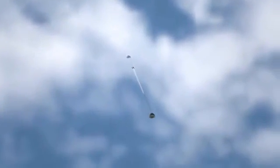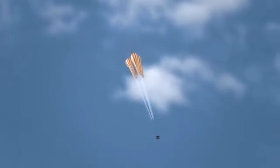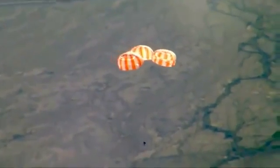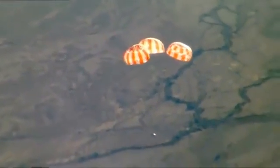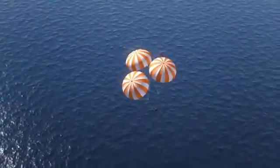Then, the three main parachutes open. Once fully engaged, this canopy would cover an American football field. It takes parachutes this size and strength to slow our descent to 20 miles per hour.